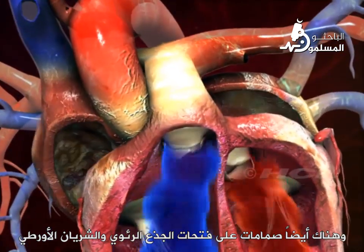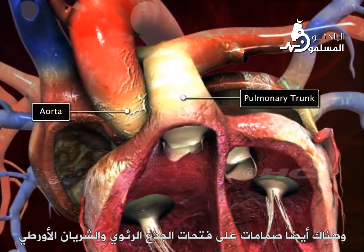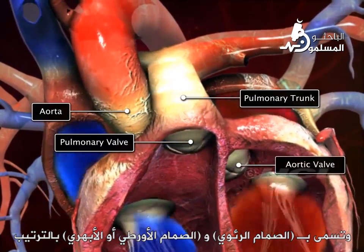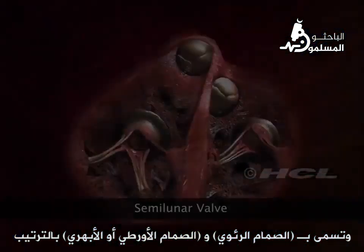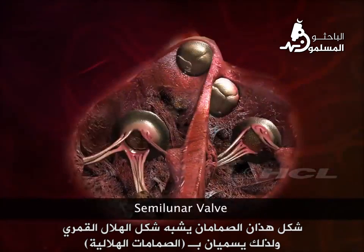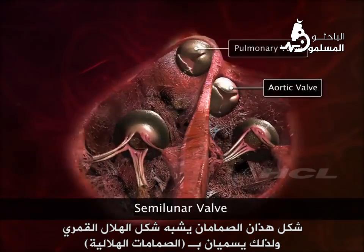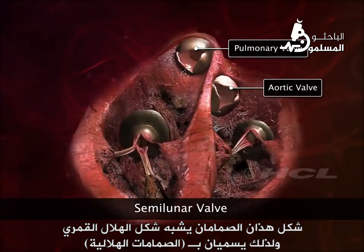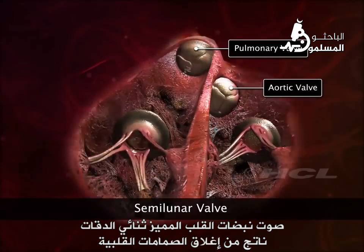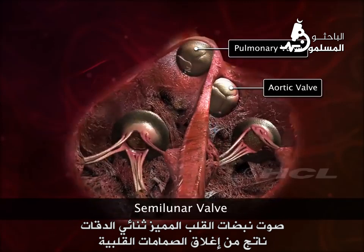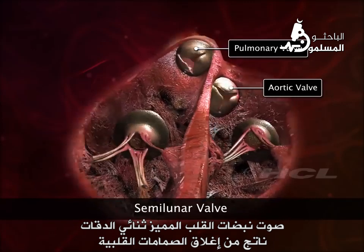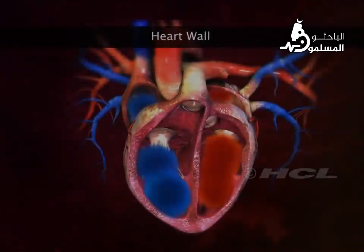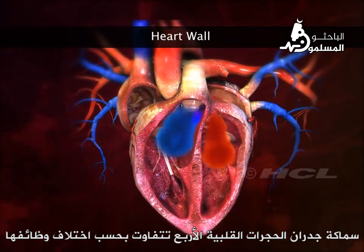There are also valves at the opening of the pulmonary trunk and the aorta, called the pulmonary valve and the aortic valve respectively. Because of their crescent moon shape, these two valves are also called semilunar valves. The characteristic double-up sound of the heartbeat is produced during the closing of the heart valves.